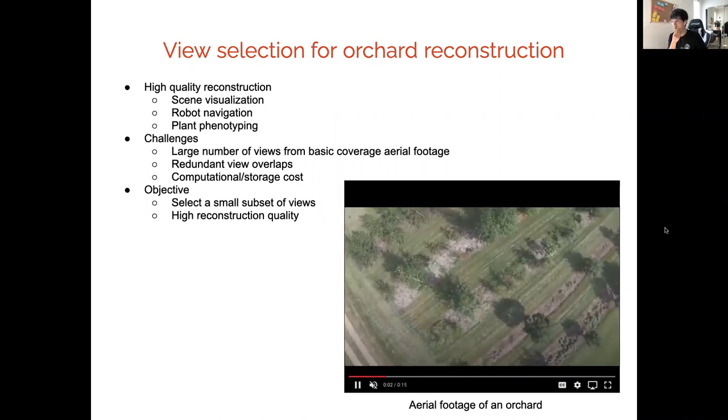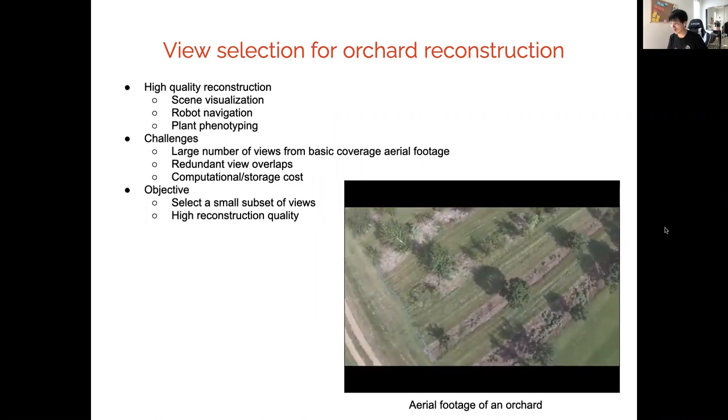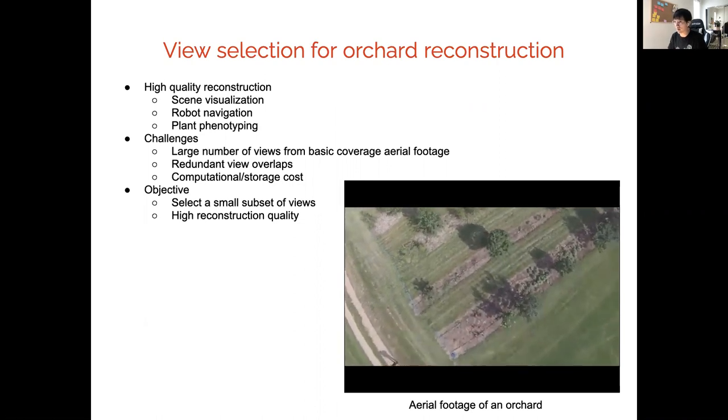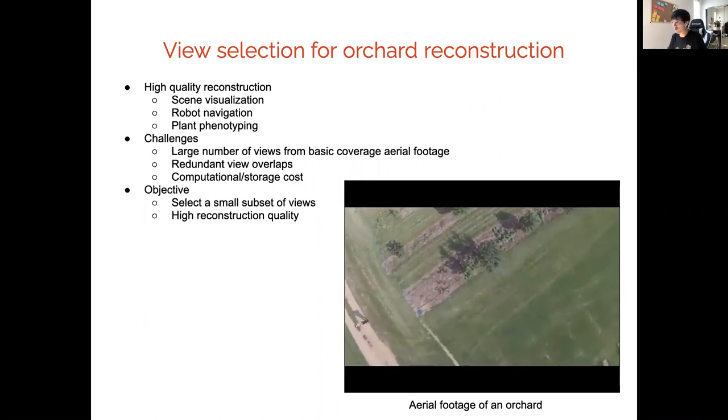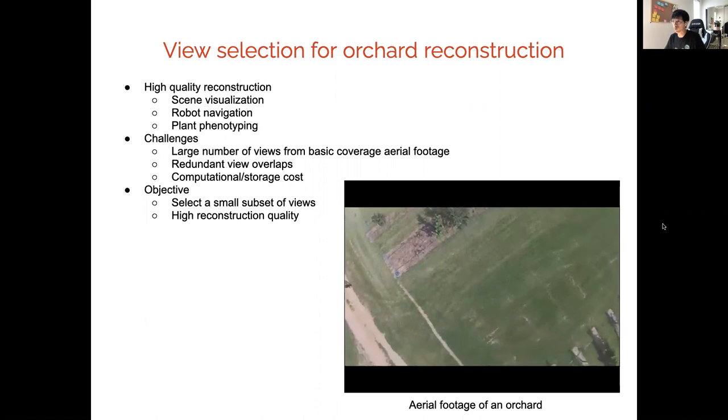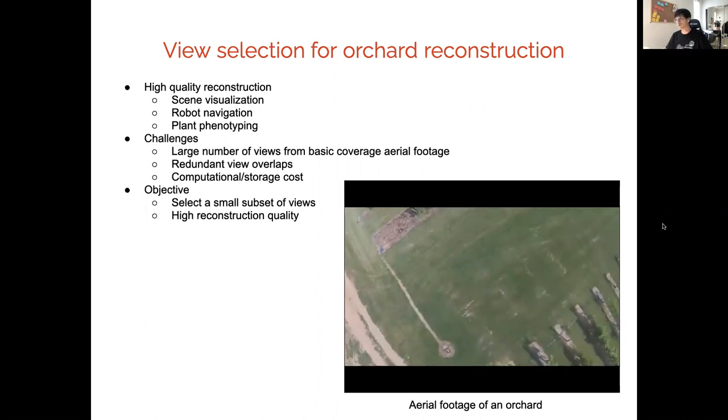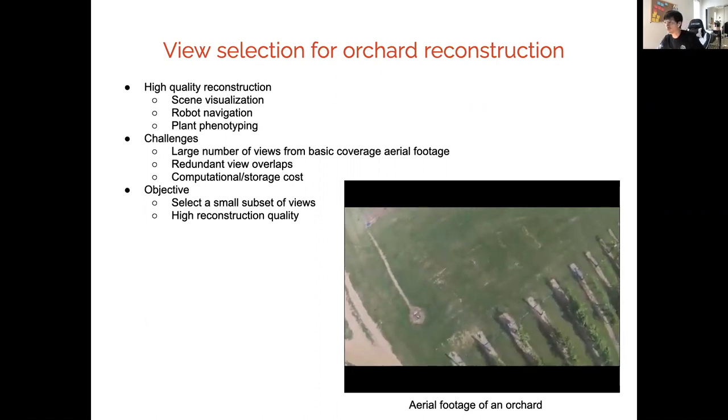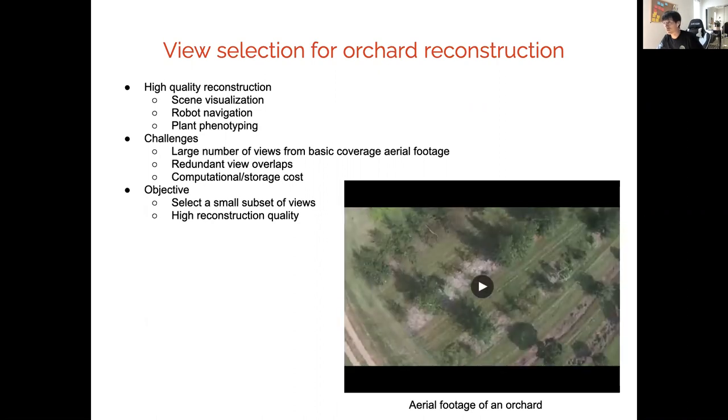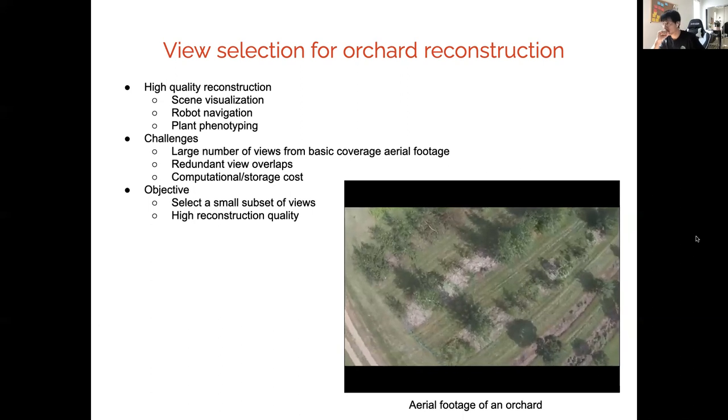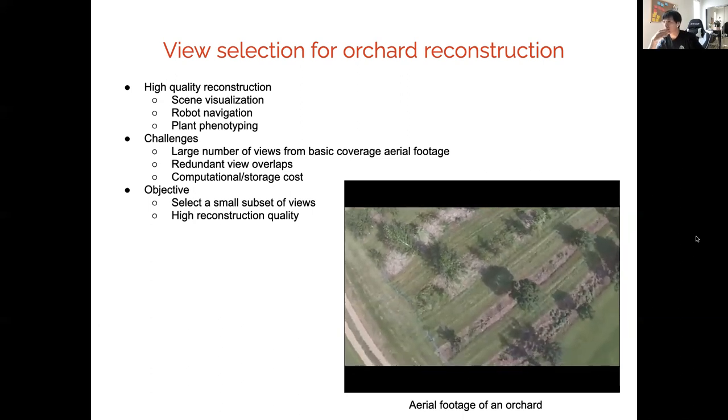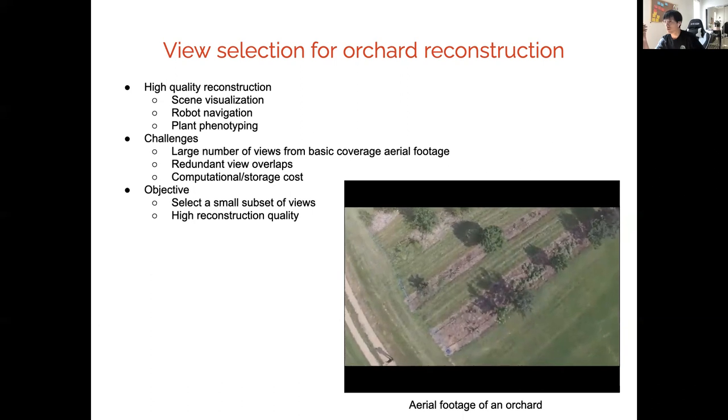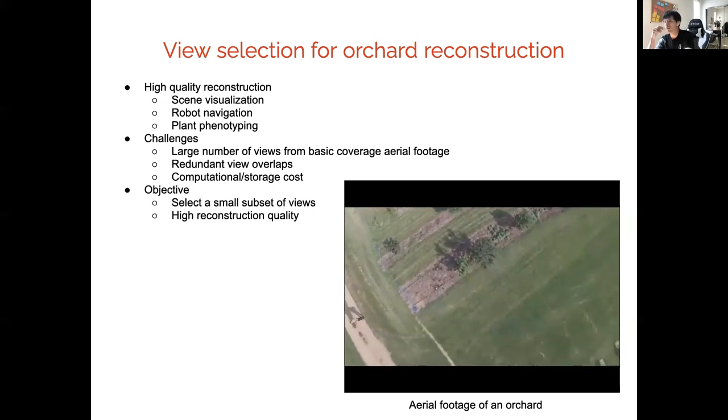High-quality reconstruction is useful for scene visualization, robot navigation, and plant phenotyping. However, the challenges are if you're given aerial footage of an orchard, there are a large number of views from this video, and most of them are redundant, which increases the computation burden. Therefore, our objective is to select a small subset of views while maintaining high reconstruction quality.